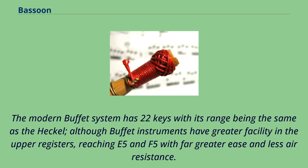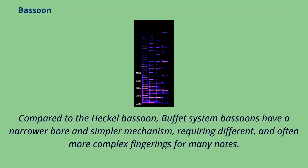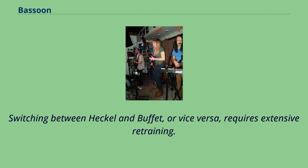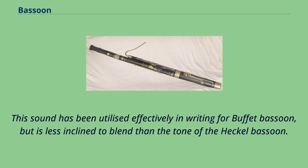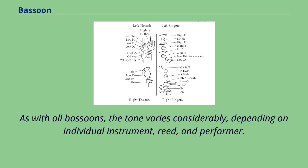Compared to the Heckel bassoon, buffet system bassoons have a narrower bore and simpler mechanism, requiring different and often more complex fingerings for many notes. Switching between Heckel and buffet requires extensive retraining. French woodwind instruments' tone in general exhibits a certain amount of edge, with more of a vocal quality than is usual elsewhere, and the buffet bassoon is no exception. As with all bassoons, the tone varies considerably depending on individual instrument, reed, and performer. In the hands of a lesser player, the Heckel bassoon can sound flat and woody, but good players succeed in producing a vibrant, singing tone. Conversely, a poorly played buffet can sound buzzy and nasal, but good players succeed in producing a warm, expressive sound.